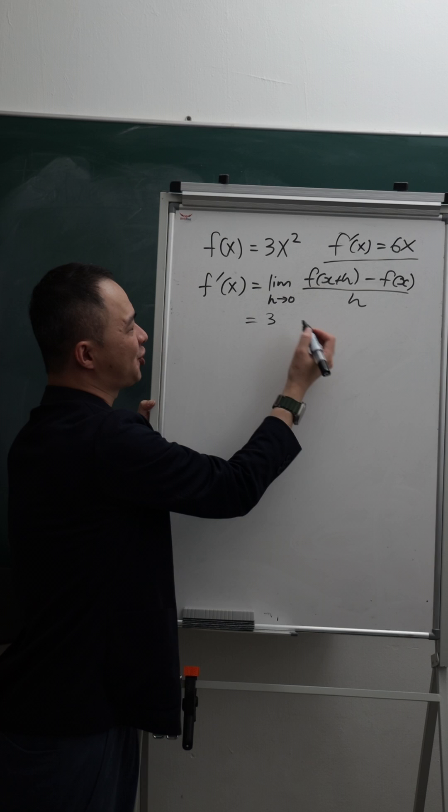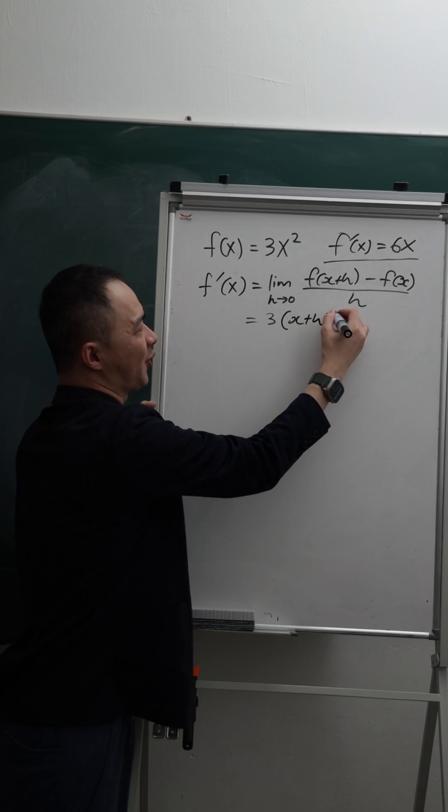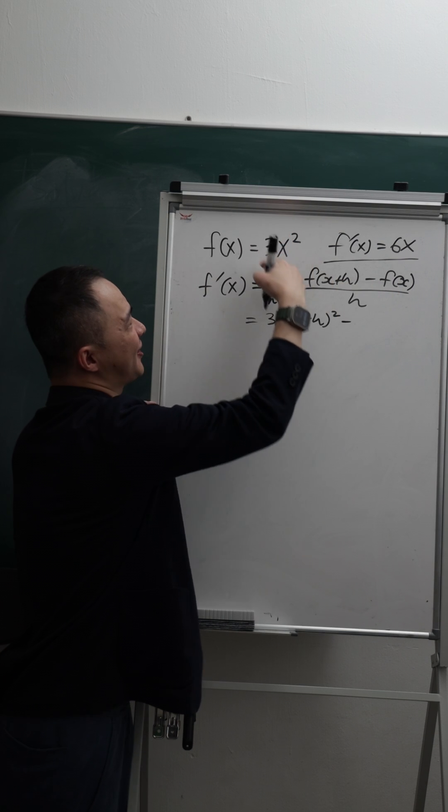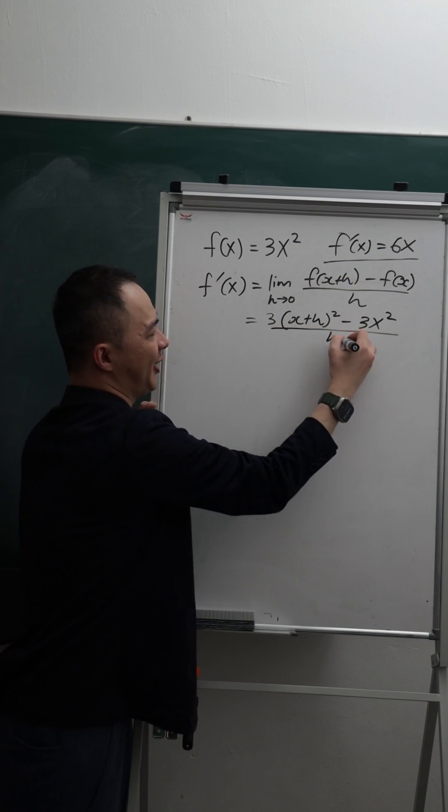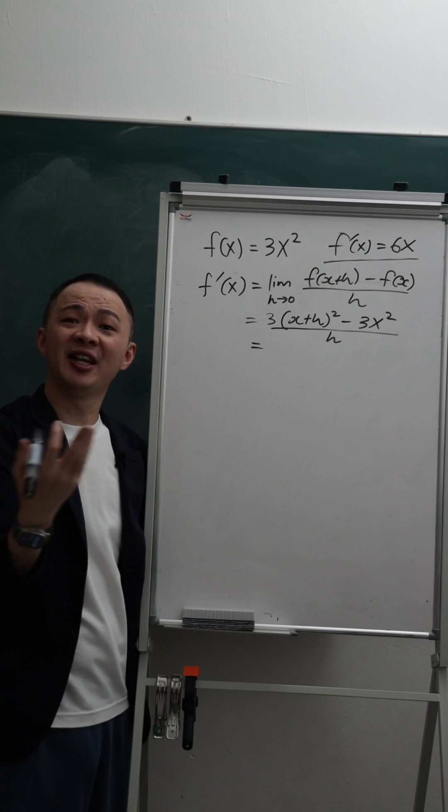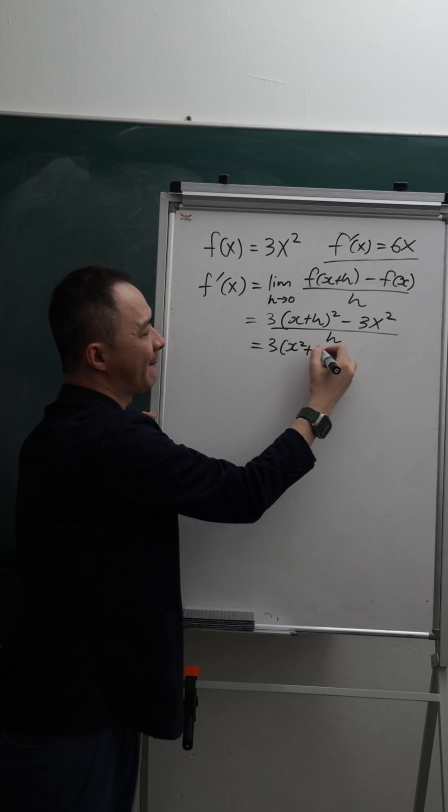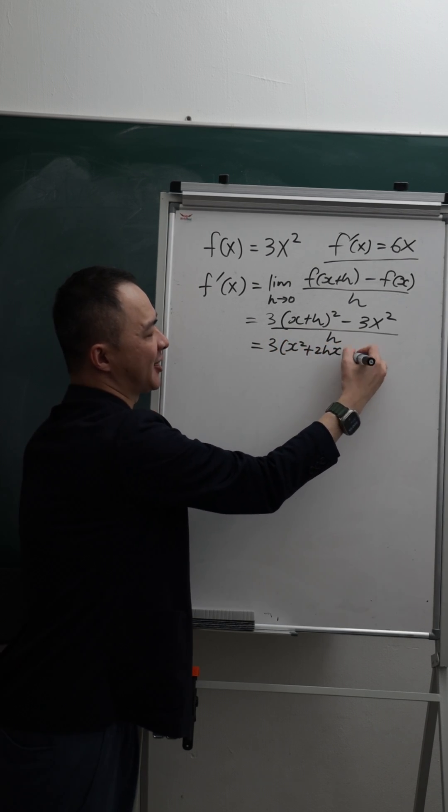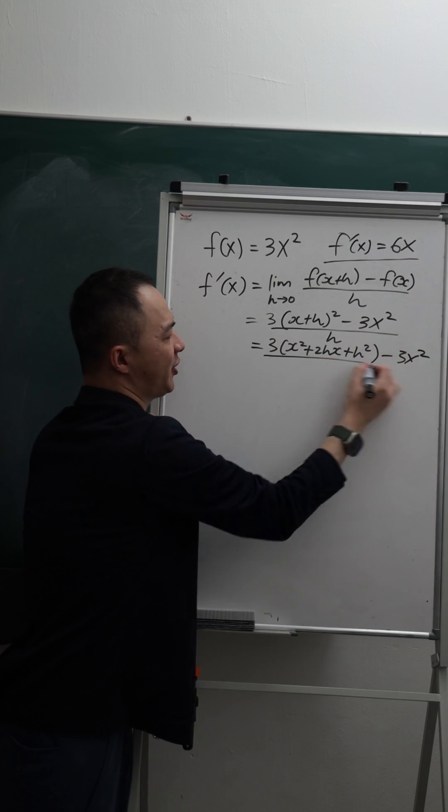So this is what happens. This is 3. My x will become (x+h)² minus my f(x) which is 3x². The whole thing divided by h. What I will do next is expand the bracket. It shouldn't be too difficult. This is x² + 2hx + h² minus 3x² over h.